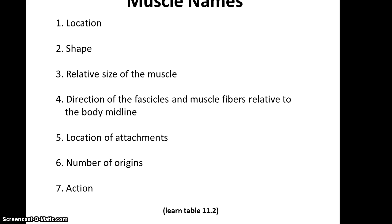Regarding muscle names, table 11.2 in your textbook goes over specific naming conventions. A key thing to remember is that muscle names often have information hidden in them that can help you identify the muscle, where it's located, and what it does. Look for things like: the location (e.g., brachii means upper arm in biceps brachii), the shape (e.g., deltoid means triangular), relative size (longus, maximus, brevis), the direction of fascicles relative to the midline (oblique, rectus), the location of attachments (e.g., geniohyoid), the number of origins (biceps, triceps), and the action (flexor, pronator, etc.). Use these terms to help you understand the muscle through its name.